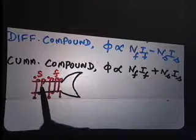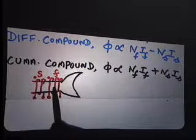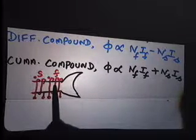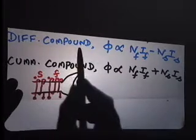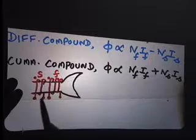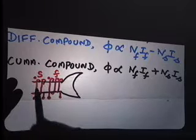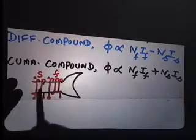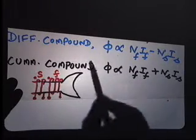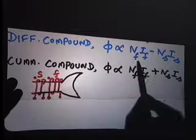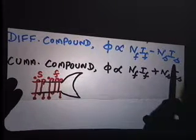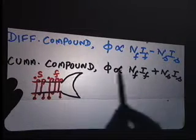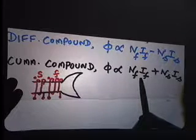The shunt field winding has larger turns and thinner wires, while the series field winding has thicker wires and smaller turns. Differentially compound means you reverse the connection, so the series excitation opposes the main field excitation. That is called a differentially compound system. In differential compound, the effective MMF is NF·IF minus NS·IS. So the flux in differential compound is the difference between the main field MMF and the series field MMF, while in cumulative compound, the flux is proportional to the sum of the shunt field MMF and series field MMF.